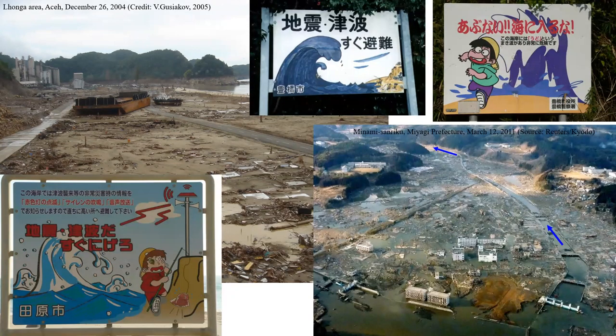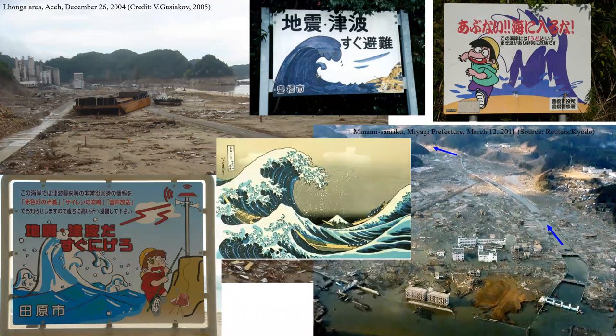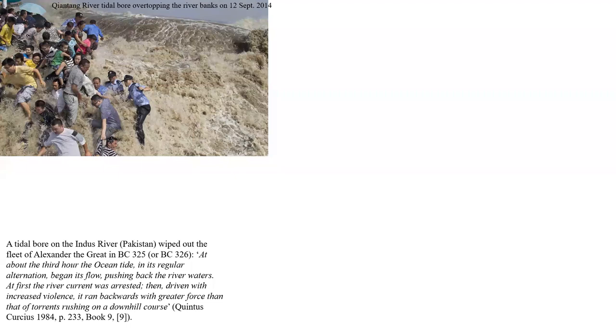In such tsunami-affected coastal zones, there are of course a number of warning signs. Interestingly, these warning signs often depict what is probably more a rogue wave — like the rogue wave of Hokusai — than the wall of water in translation. Even tidal bores, sometimes depicted idealistically, and we will come back to this, can have dramatic impact.